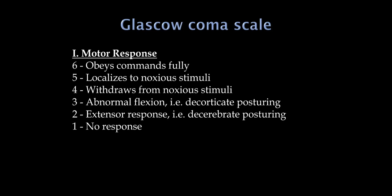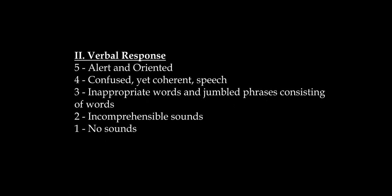Surgeons use the Glasgow Coma Scale as a quick numerical communication tool for confused patients — for example, after a car accident. Motor response ranges from 6 (obeys commands fully) to 1 (unresponsive). Verbal response goes from alert and oriented down to no response. Eye opening goes from spontaneous to no eye opening. A GCS of 3 is the lowest score and can be seen in someone who is brain dead. A score of 15 suggests the patient is cognitively normal or close to it.